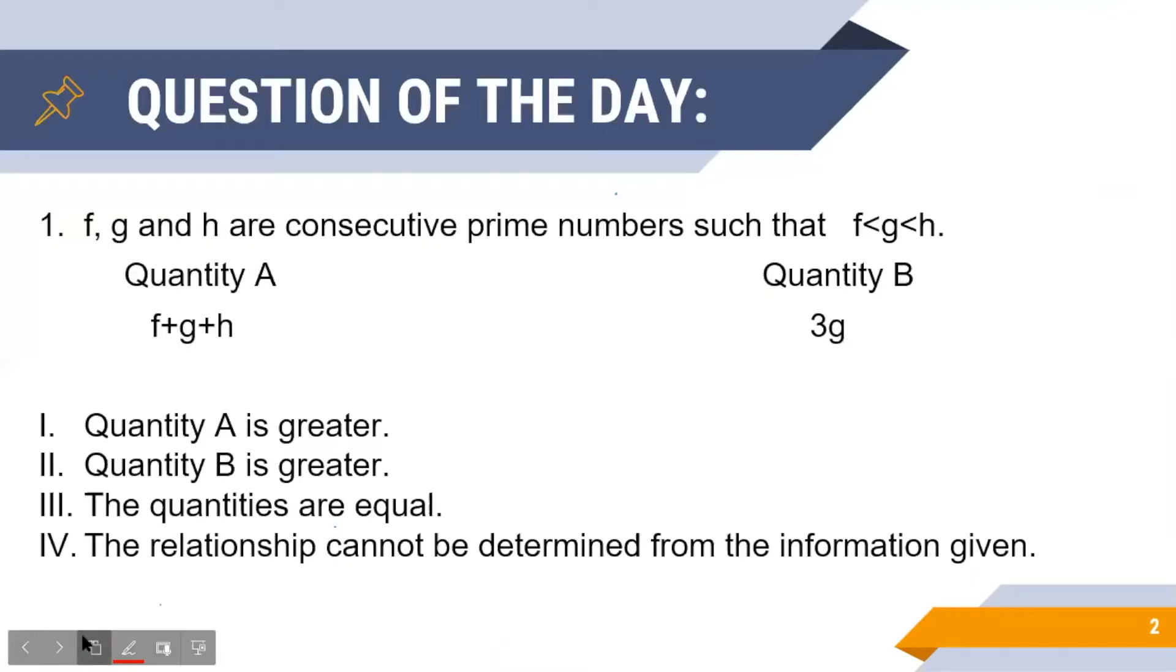To begin with, today's question is a question of quantitative comparison wherein there are three consecutive prime numbers namely f, g and h such that f is always less than g while g is always less than h.